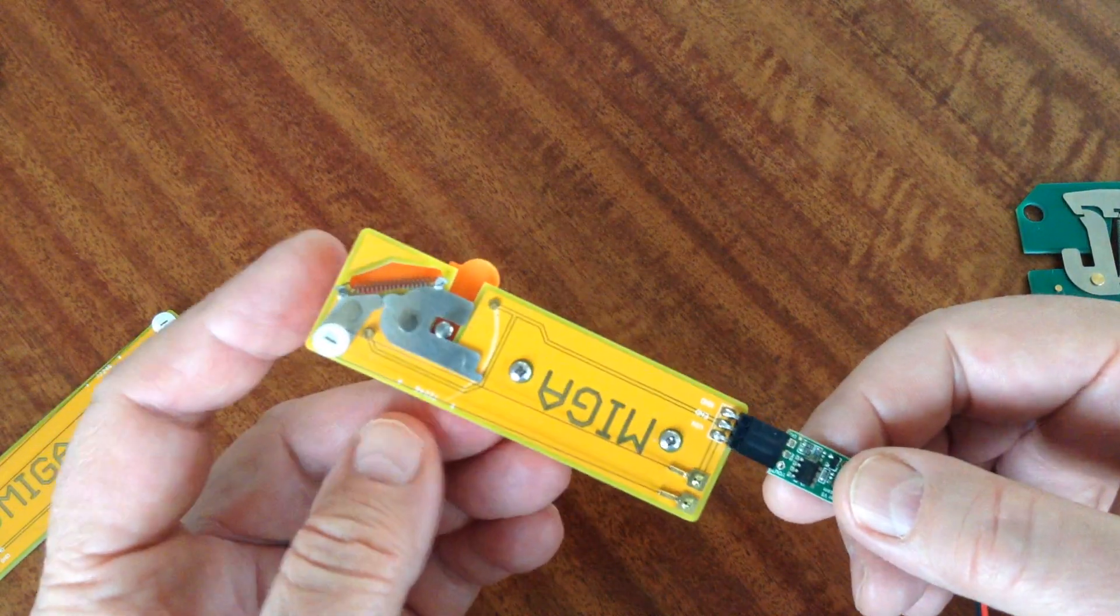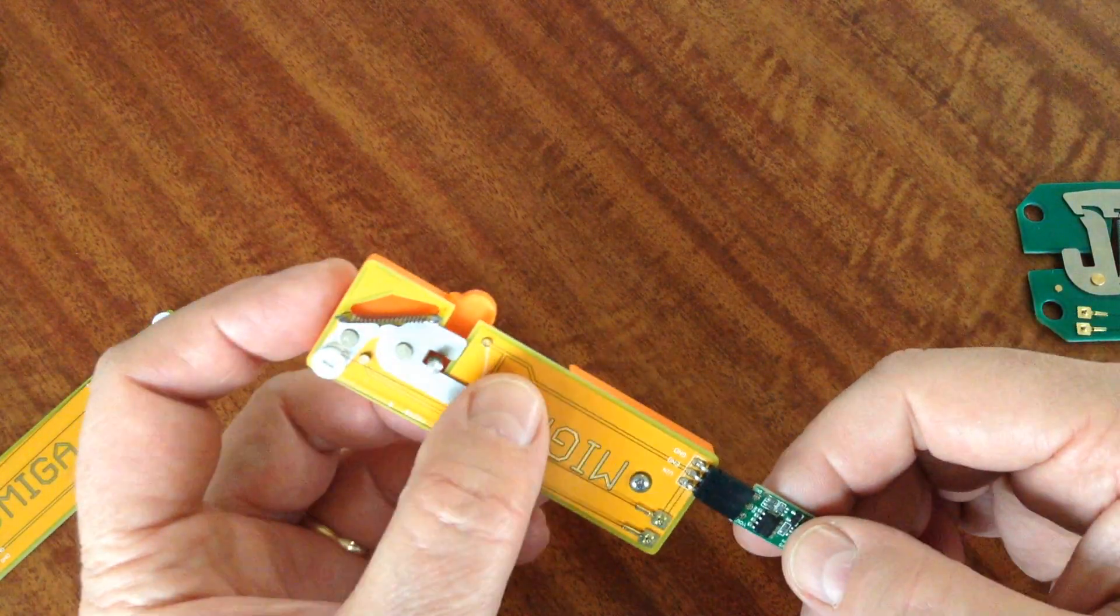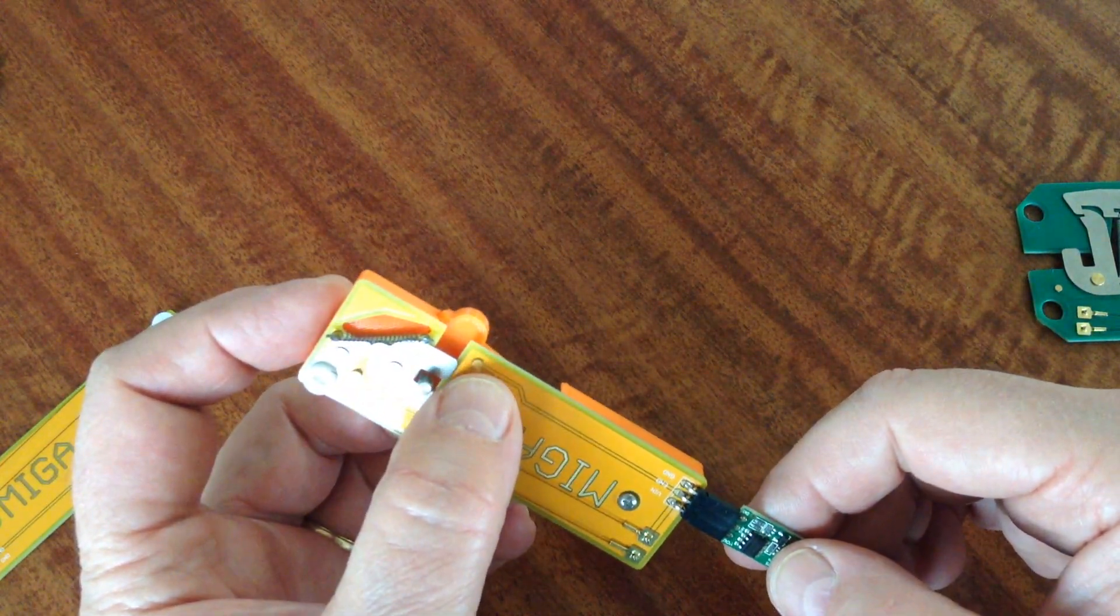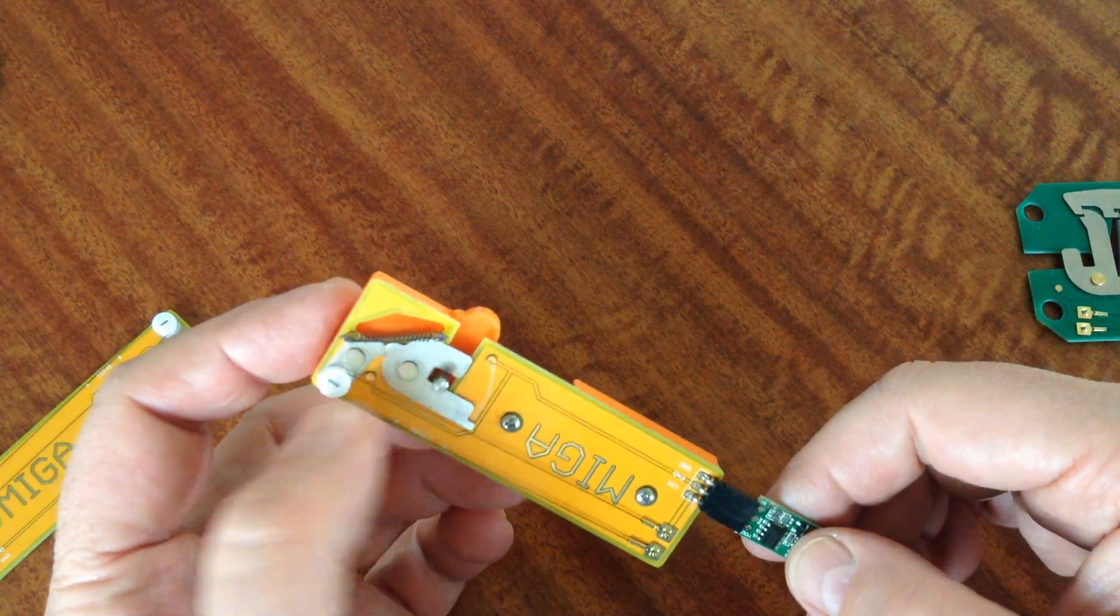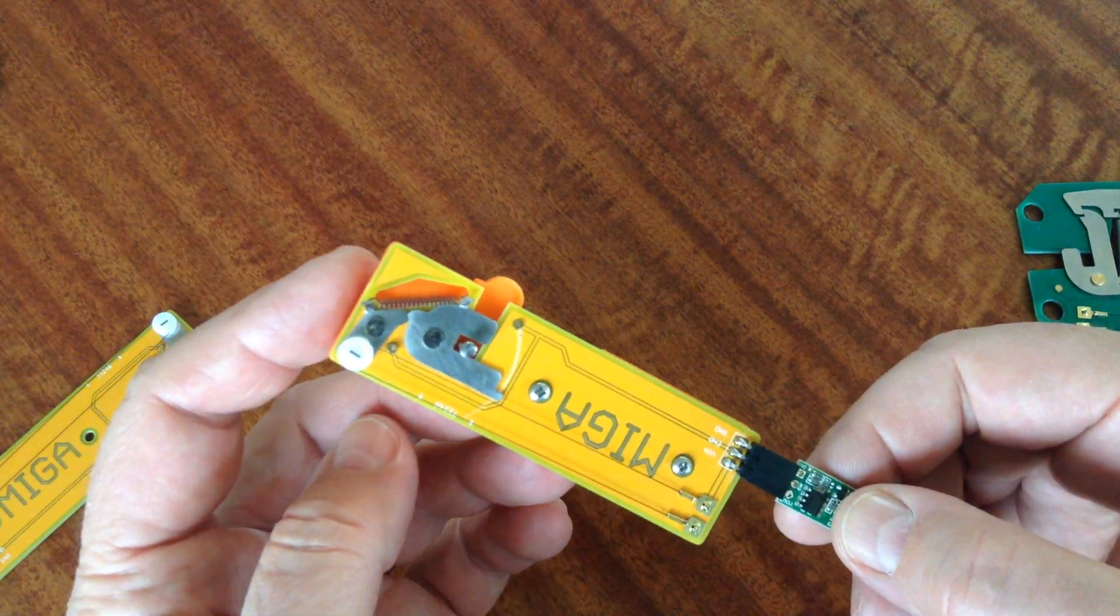When we push the button, we're drawing current from the battery. And when the actuator is fully opened, it hits a hard stop here, which cuts current through the MOSFET.